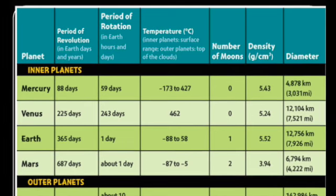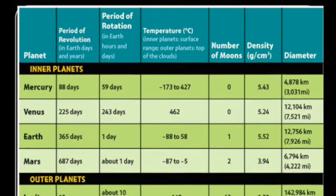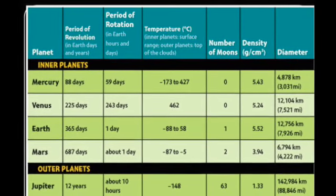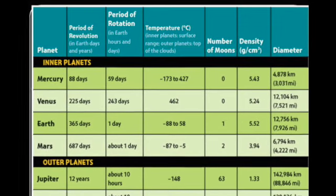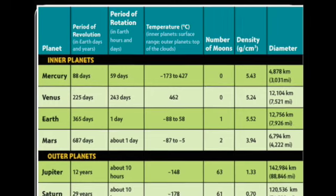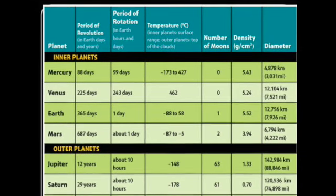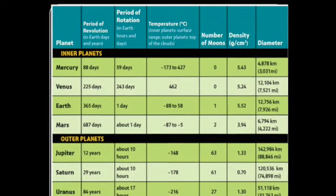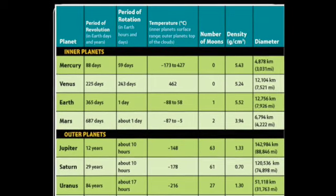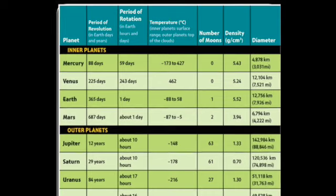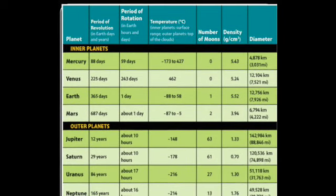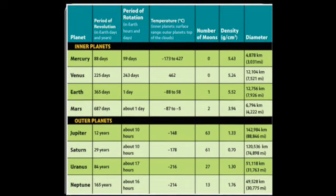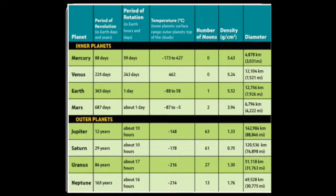Some information about the inner and outer planets isn't obvious just by looking at them, so we use charts that scientists have compiled. This chart has all of the inner planets and all of the outer planets. We can see each planet's period of revolution — the time to go around the Sun, listed in Earth days and years — their period of rotation, temperature ranges, number of moons, density, and diameter. I'm going to use this information to keep building our poster on how inner and outer planets are different.